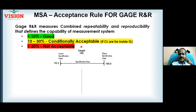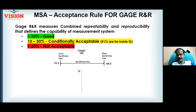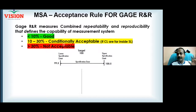For example, consider a drawing where the target measurement is 100 and the customer specification is ±0.5, so USL = 100.5 and LSL = 99.5. If all your readings are around 100 — that is, all readings are around the center only — then even a 30% error will not affect your decision.